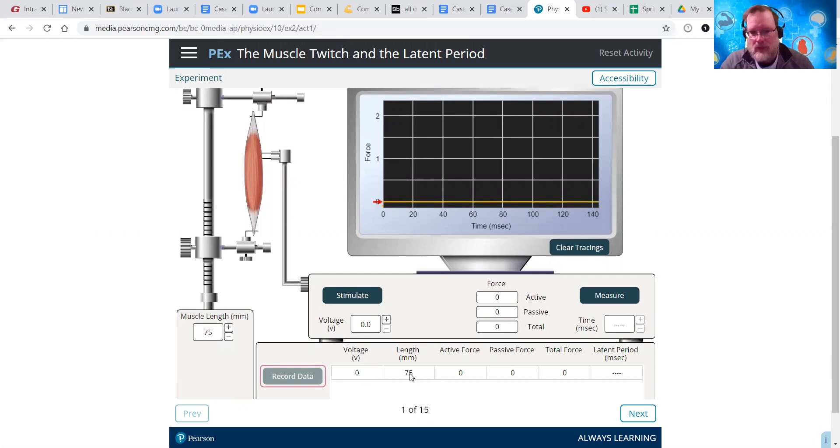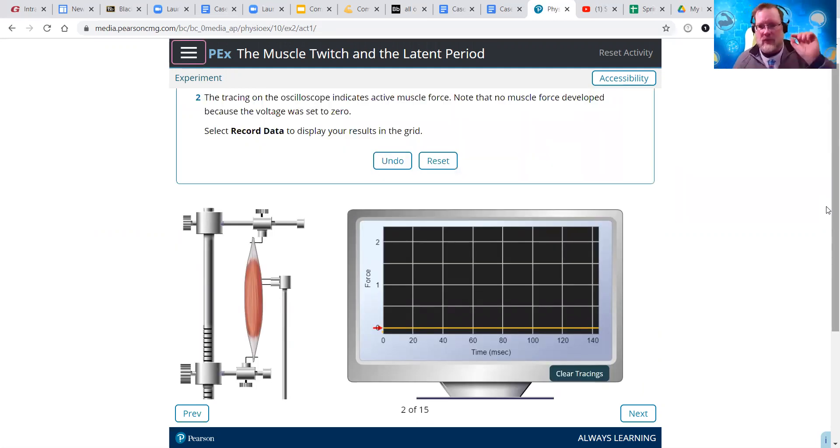Then we hit record data. Zero volts, we've got the muscles lengthened to 75 millimeters, and we didn't get any type of force. We click next on this one. Some of these physioixes are different than others. Some, as soon as you do what it tells you to do, it goes to the next thing, and then you do that. Some of them, like this one, you have to physically click next at the bottom to move to the next thing.